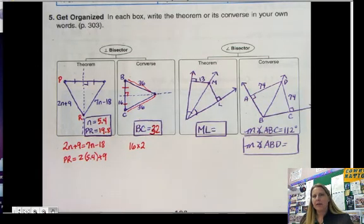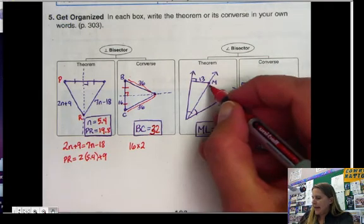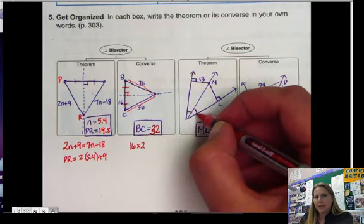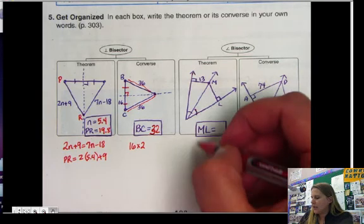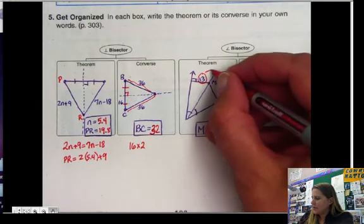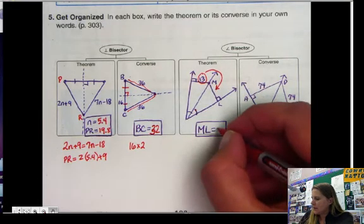Okay, the next one is the angle bisector theorem. Since M is on the angle bisector, we know that it's an angle bisector because we're told here that the two angles are equal. Then we know that this also has to be 13, so ML is 13.